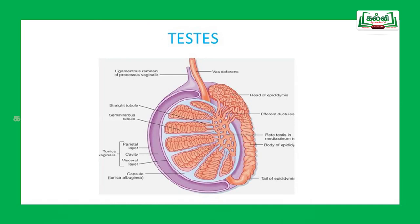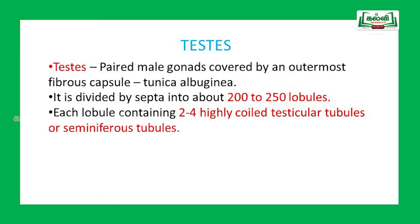The testes is an ovoid structure. A pair of testes is placed in the scrotum and covered by a fibrous capsule called the tunica albuginea. Inside the testes there are many compartments called lobules, separated by walls called septa. The testes are paired male gonads covered by this outermost fibrous capsule — the tunica albuginea — and divided by septa into about 200 to 250 lobules.